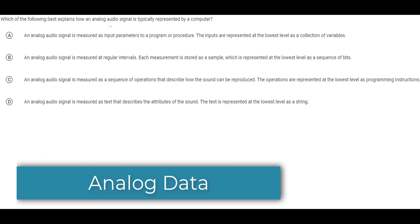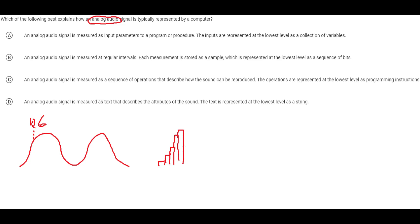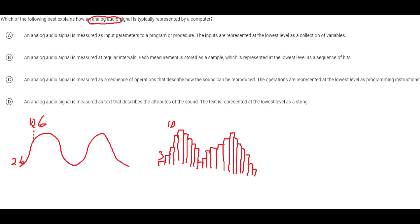Analog refers to data like images or sounds that have a continuous structure — for example, a sound value might be something like 10.6. Digital is different: it's represented by bits, which is what modern computers use. The same data in digital form is blockier and discrete, so that same value might just be 10, or 3, represented as binary like 011 or 1010.